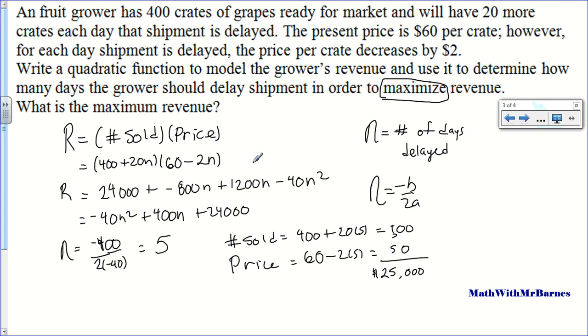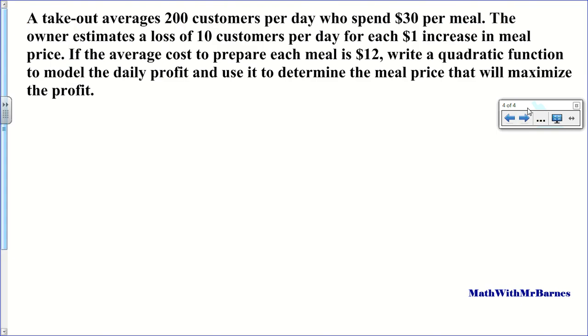Alright, let me just, I'm just checking something here. Alright, there we go. Last question. So it says, this is another max revenue question. You can see maximum profit. A takeout averages 200 customers per day who spend $30 per meal. The owner estimates a loss of 10 customers per day for each $1 increase in meal. If the average cost to prepare each meal is $12, write a quadratic function to model the daily profit and use it to determine the meal price that will maximize the function. So we got a little bit going on here. A little bit more going on here than a particular equation. Because we got this cost of a prepared meal involved here. So let's look at, again, start with our revenue, which is the number sold times the price.